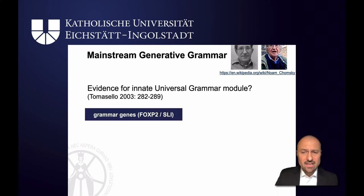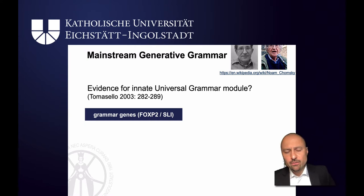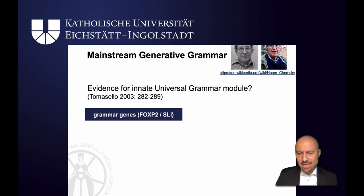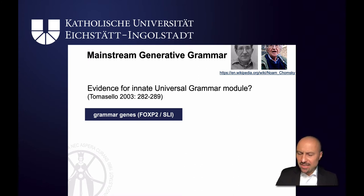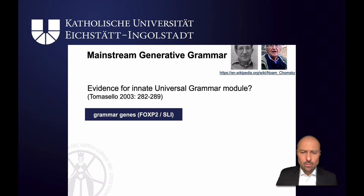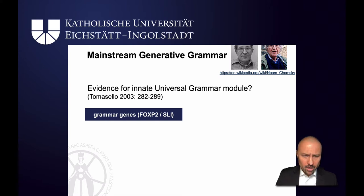One piece of evidence that is often used are so-called grammar genes. There is a gene called FOXP2, and in a British family it turned out that this gene had a defect and they suffered from something called specific language impairment. As the name already says, it seemed as if their language alone was impaired, whereas their other cognitive skills seemed to be intact — they seemed to have had normal intelligence. Now that would be good evidence for an innate grammar, because if something in your genes went wrong and all it affected was language, that could be evidence that universal grammar is part of our genetic setup.